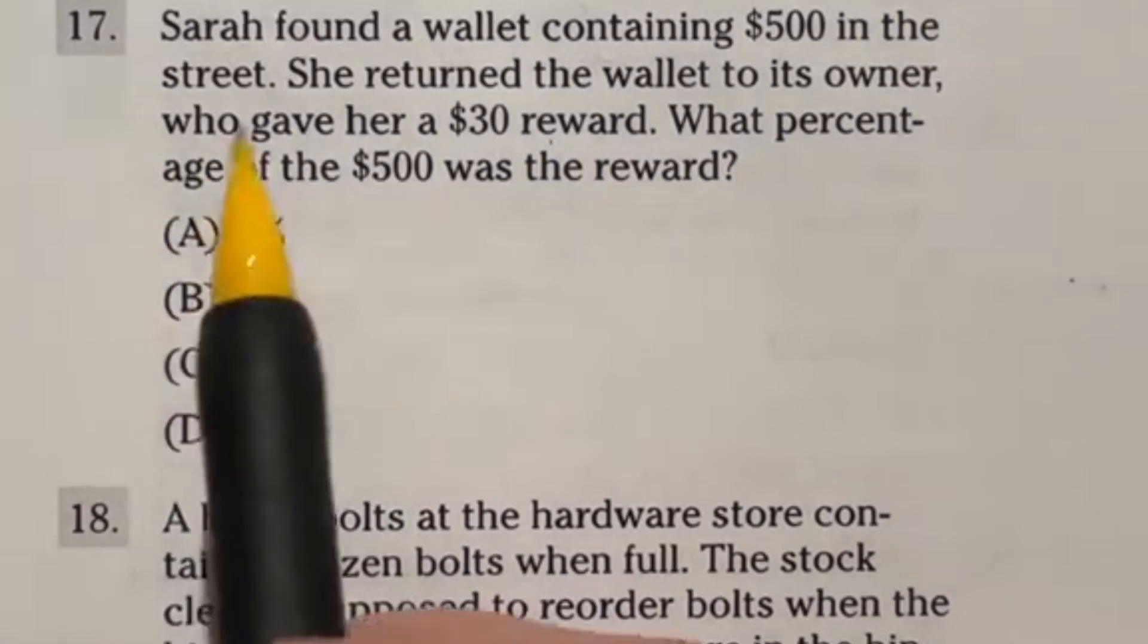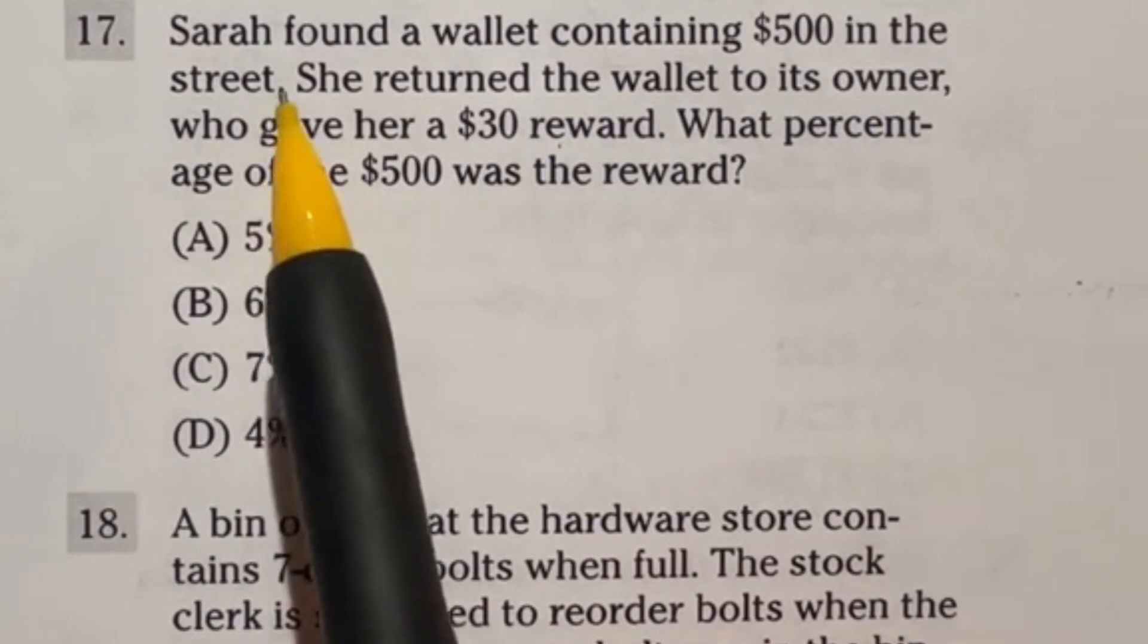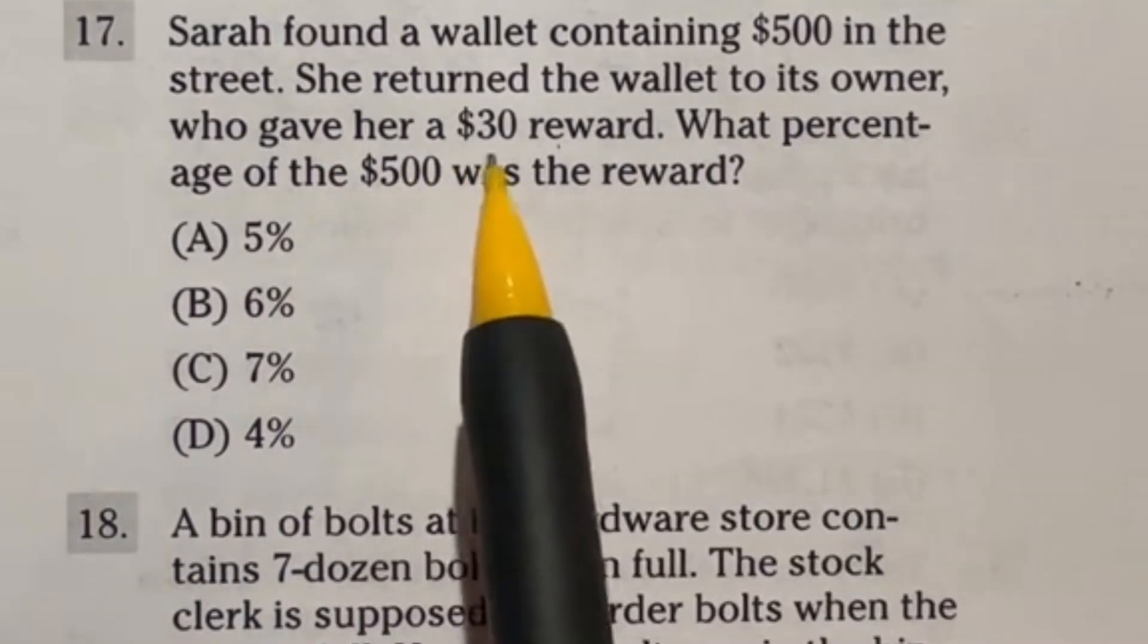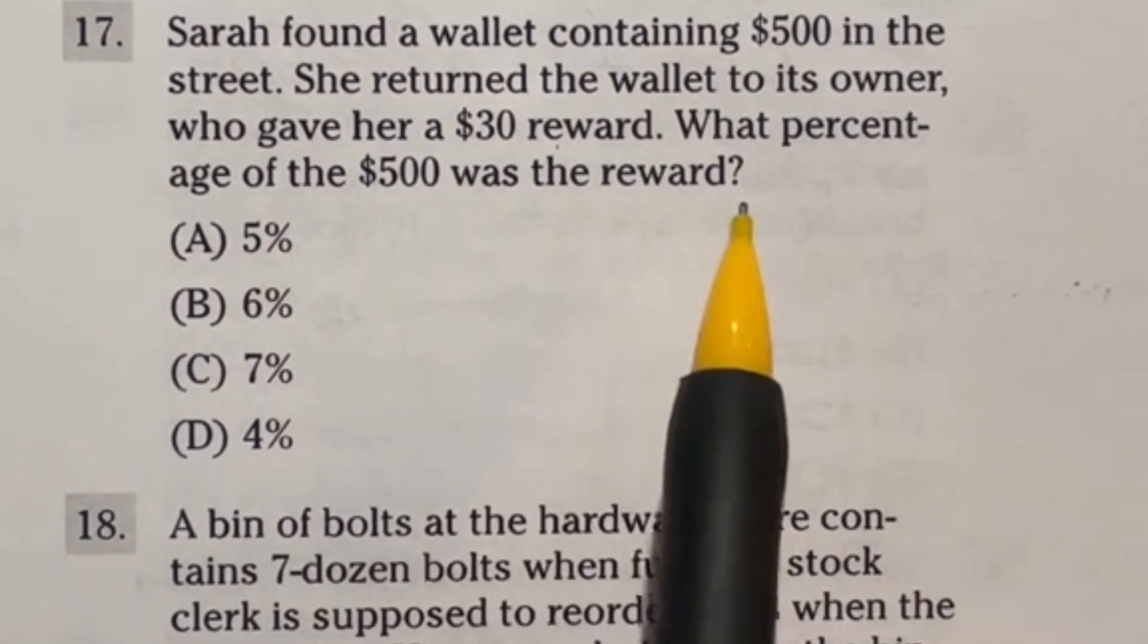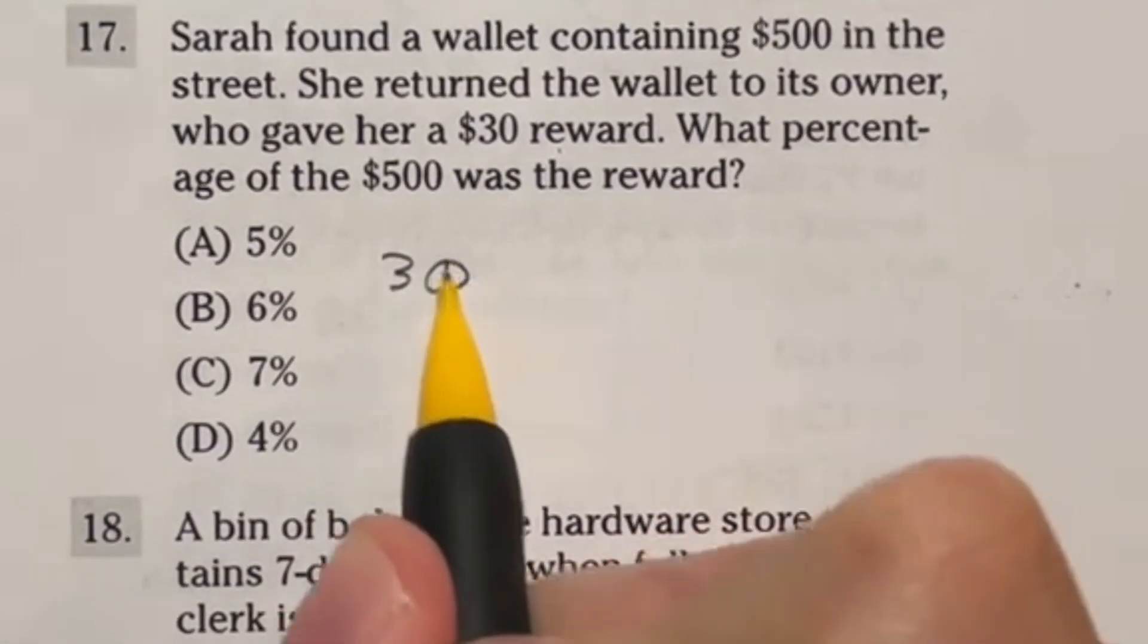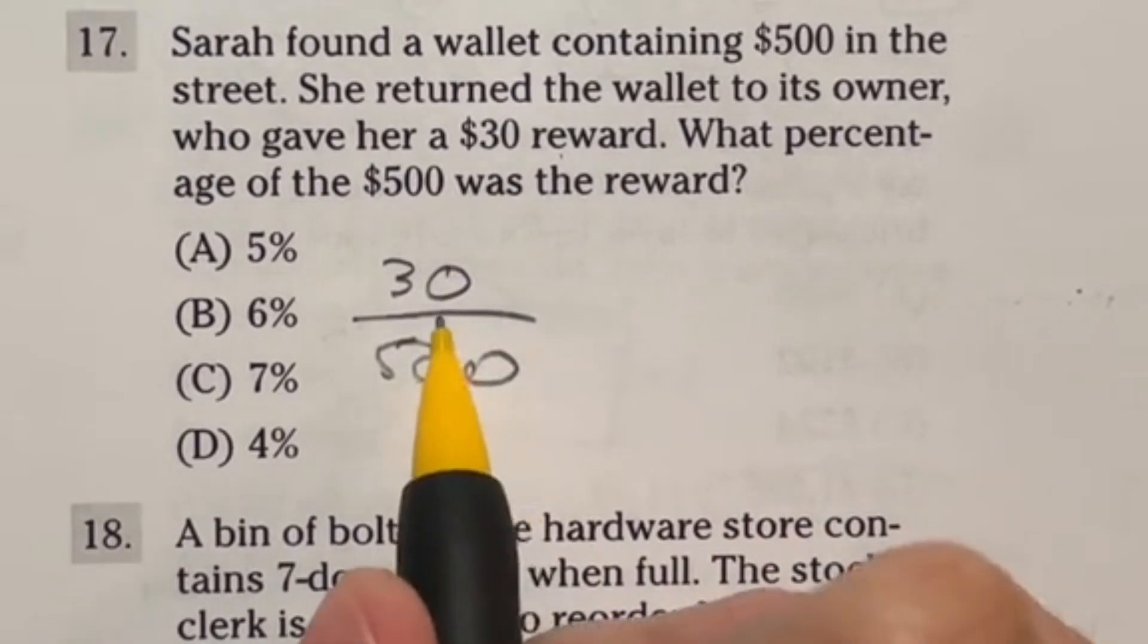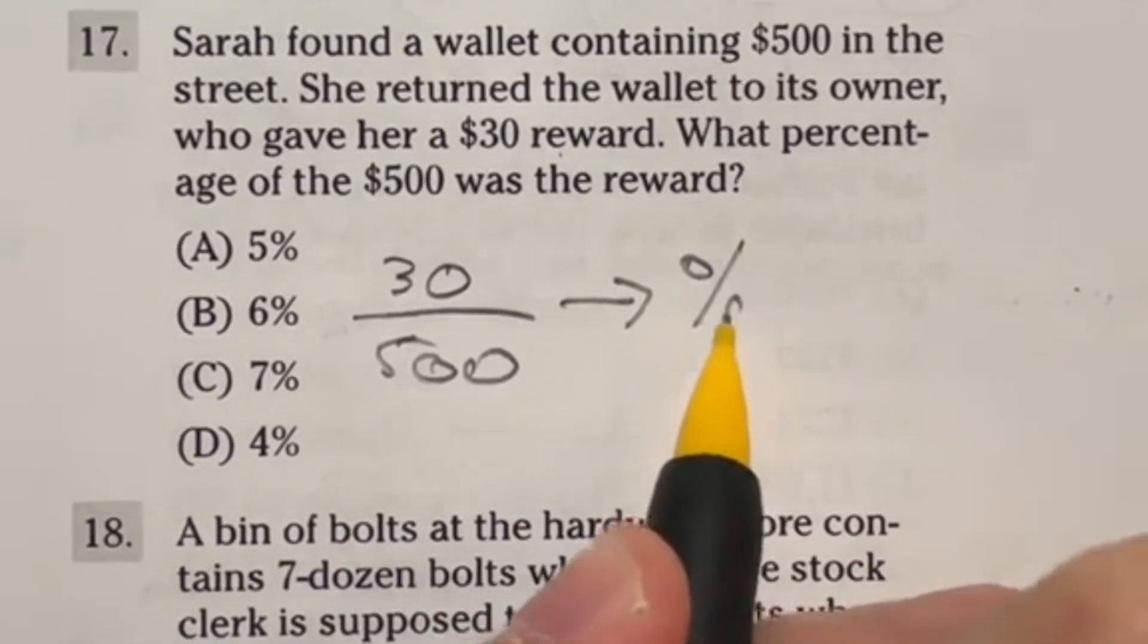Get ready for number 17. It says Sarah found a wallet containing $500 in the street, and lucky day for Sarah, but she returned the wallet to its owner who gave her a $30 reward. What percentage of the 500 was the reward? So here's the deal. She got $30 out of that 500. This fraction, we're going to be trying to turn it into a percent.